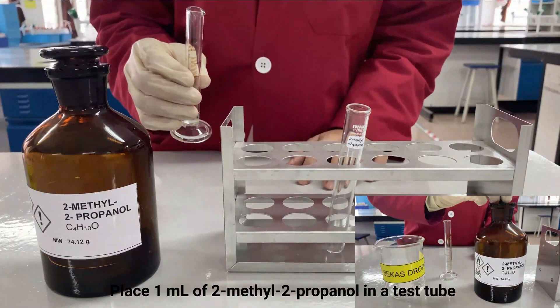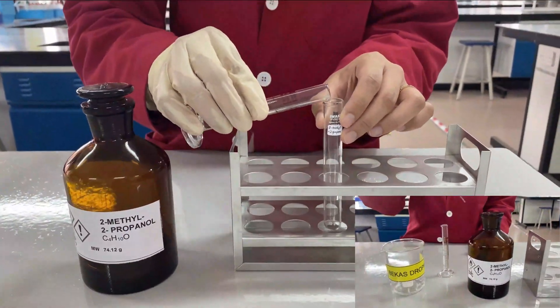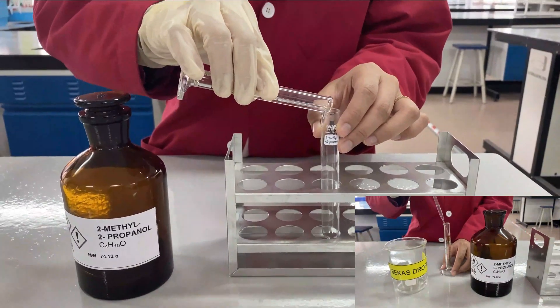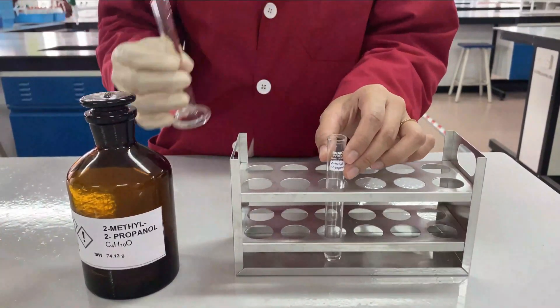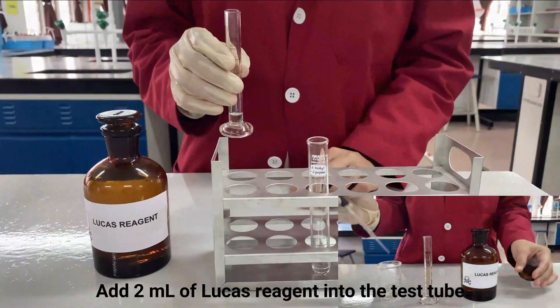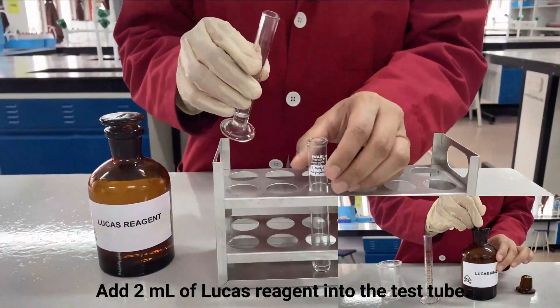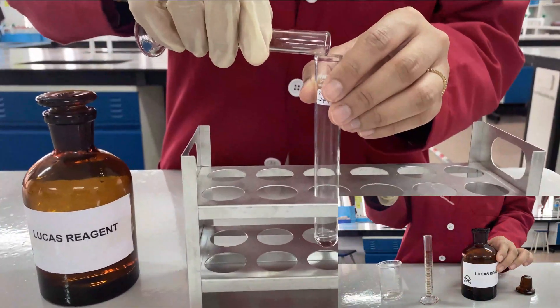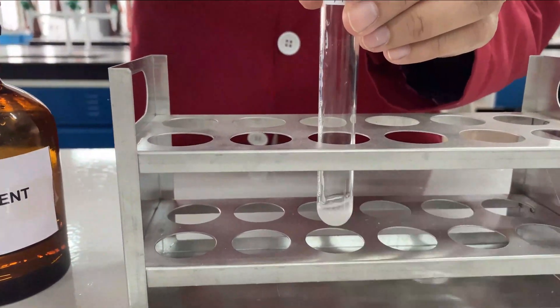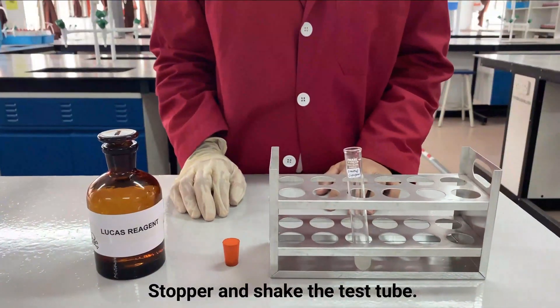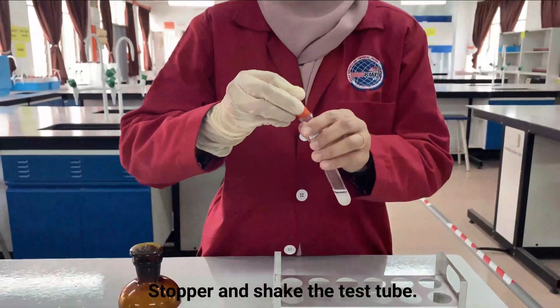The first step is to place 1 ml of 2-methyl-2-propanol into the test tube. The second step is to add 2 ml of Lucas reagent into the test tube. The third step is to stopper and shake the test tube.